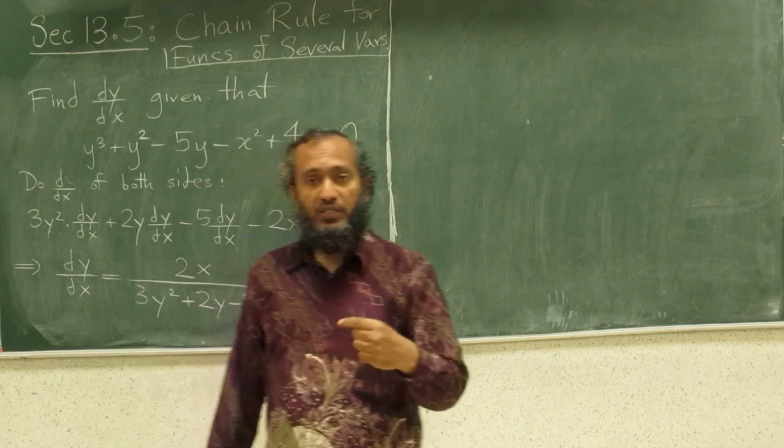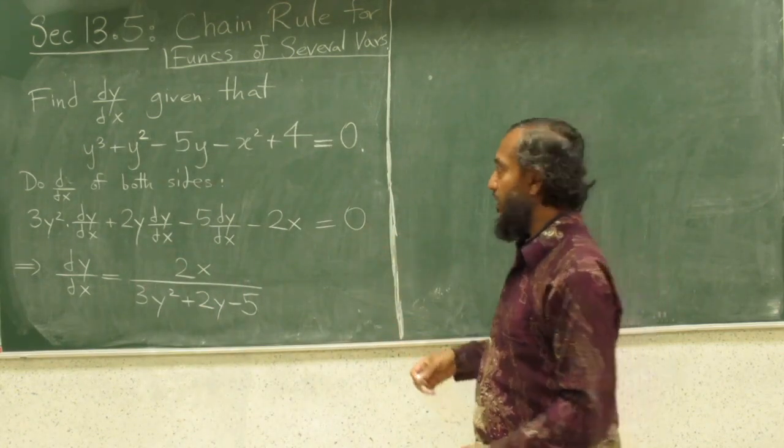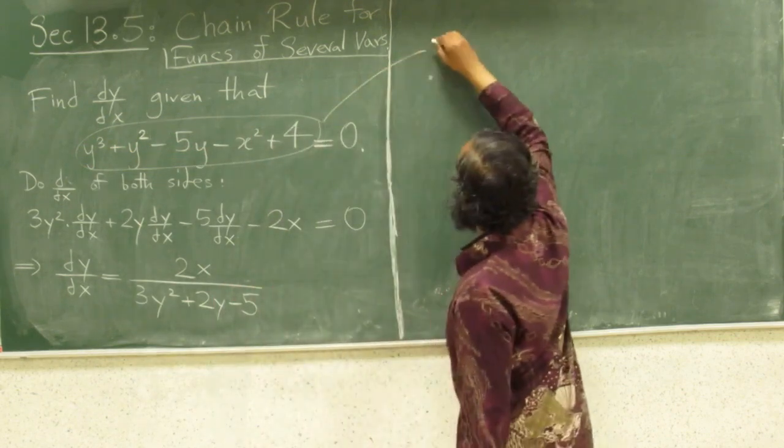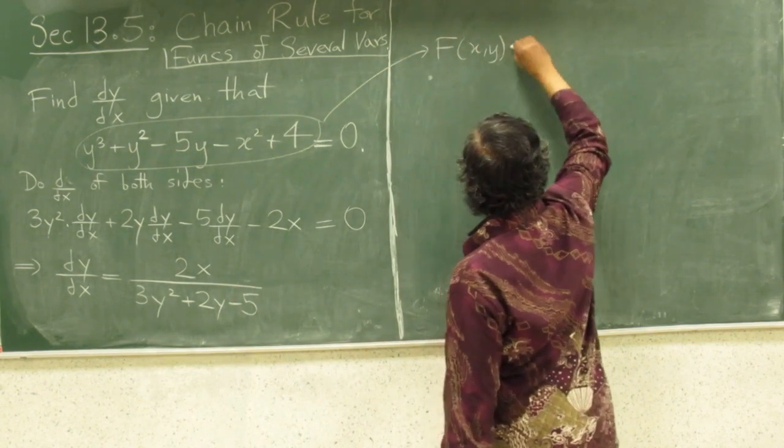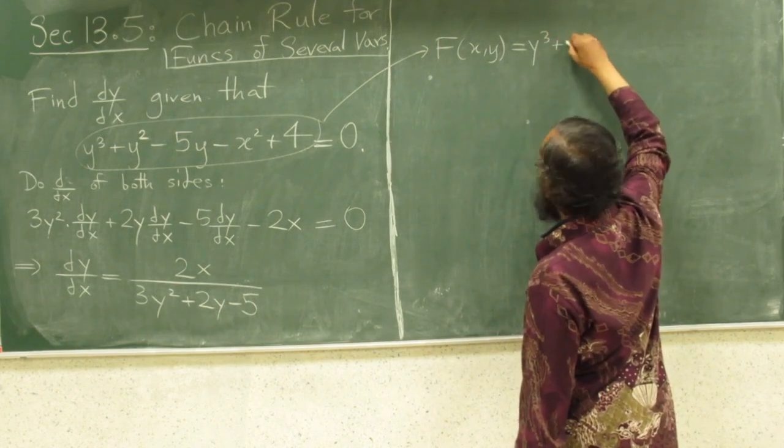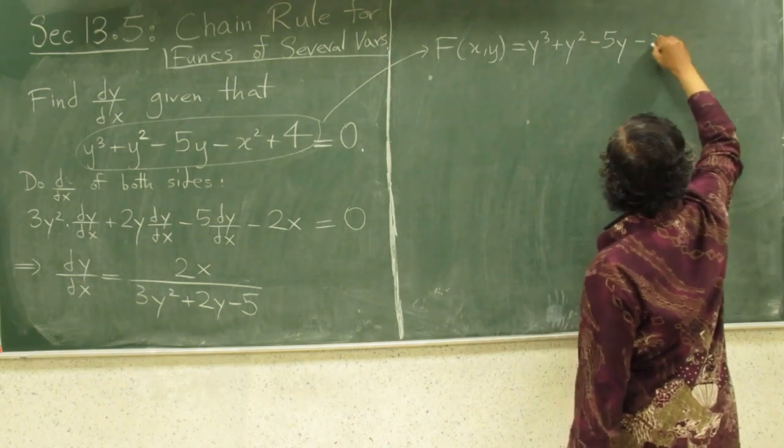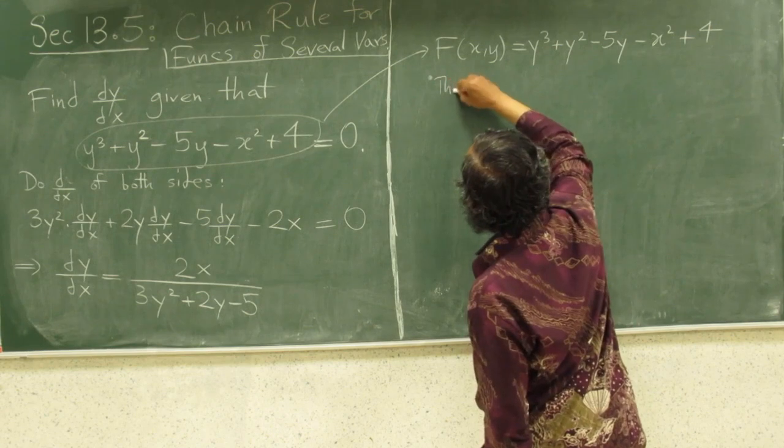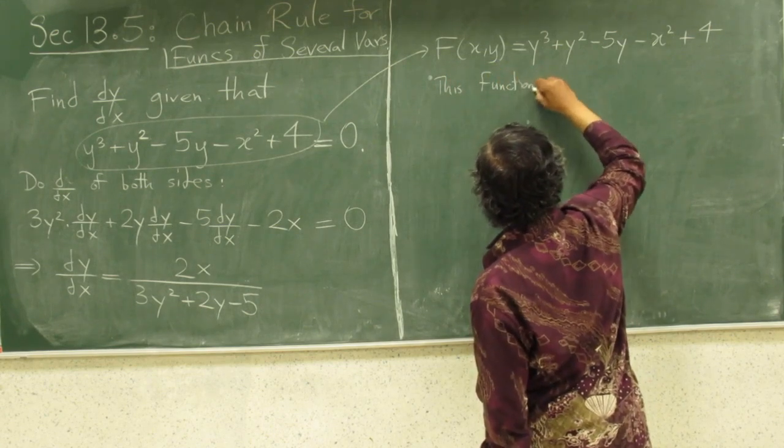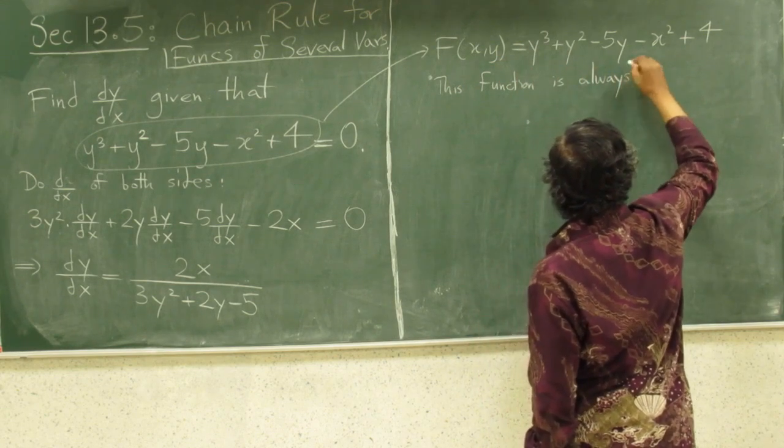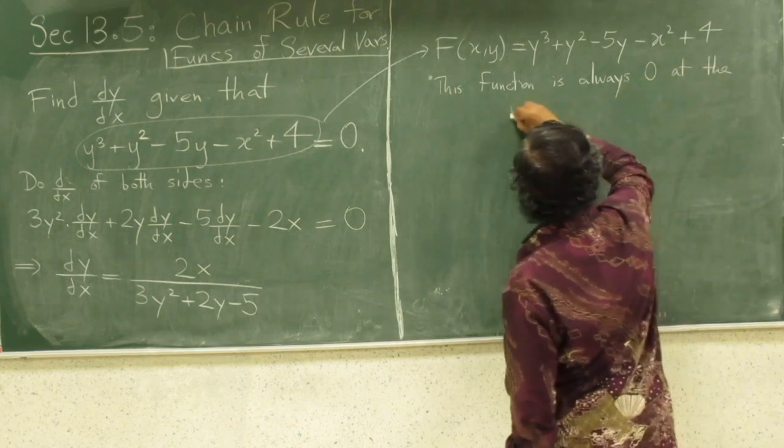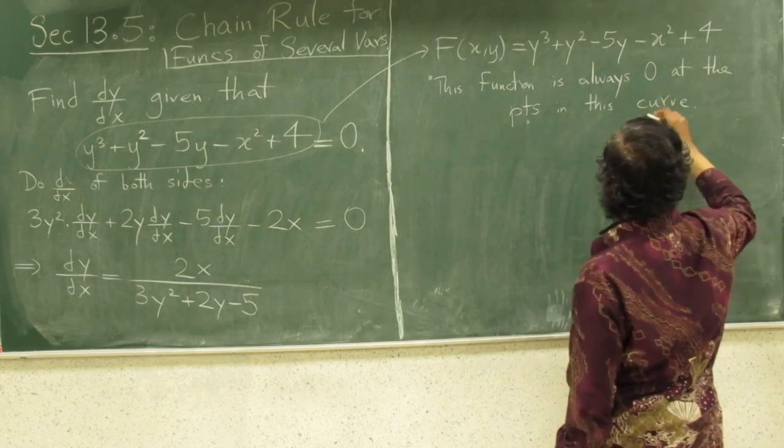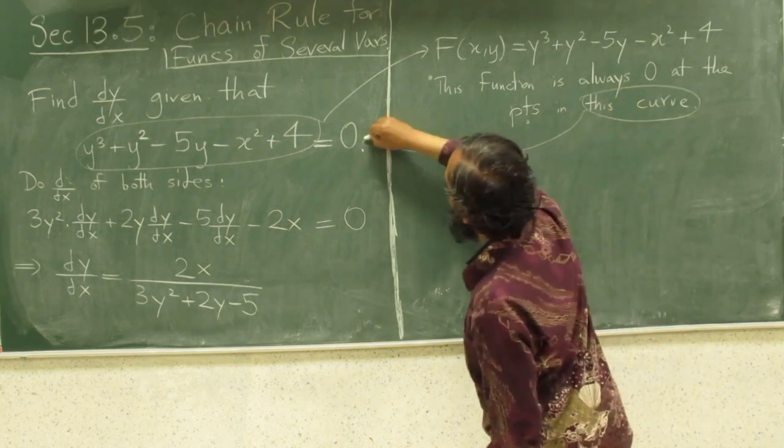How can the chain rule that we have learned for functions of several variables help us with this, help us do the same thing, you know, slightly, or you can see it in a different way. Think of this as your, some function of x and y. This is y cubed plus y squared minus 5y minus x squared plus 4. And this function is always 0 at the points in this curve.